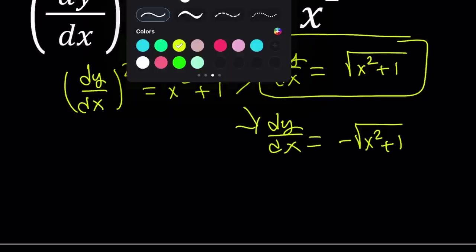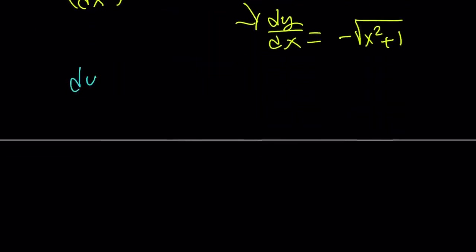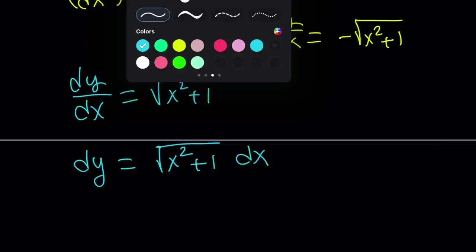Let's go ahead and proceed. What are we going to do to solve this equation? We can first go ahead and separate the variables. So let's go ahead and put the x's on the same side like this. And then we're going to integrate both sides.